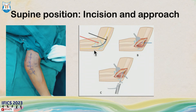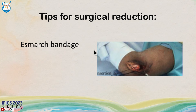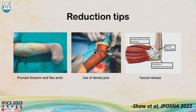In the conventional supine technique, the arm is placed on a side arm table with the arm externally rotated and a medial incision is made. The ulnar nerve is isolated and retracted. To facilitate reduction, an Esmarch bandage can be applied distal to proximal to squeeze the flexor muscles and draw the medial epicondyle toward the fracture bed. The forearm is pronated and the wrist is flexed to relax the common flexor origin. A dental pick can be used to hook the fragment toward the fracture bed, and a superficial fascial release of the common flexor origin can also facilitate reduction.